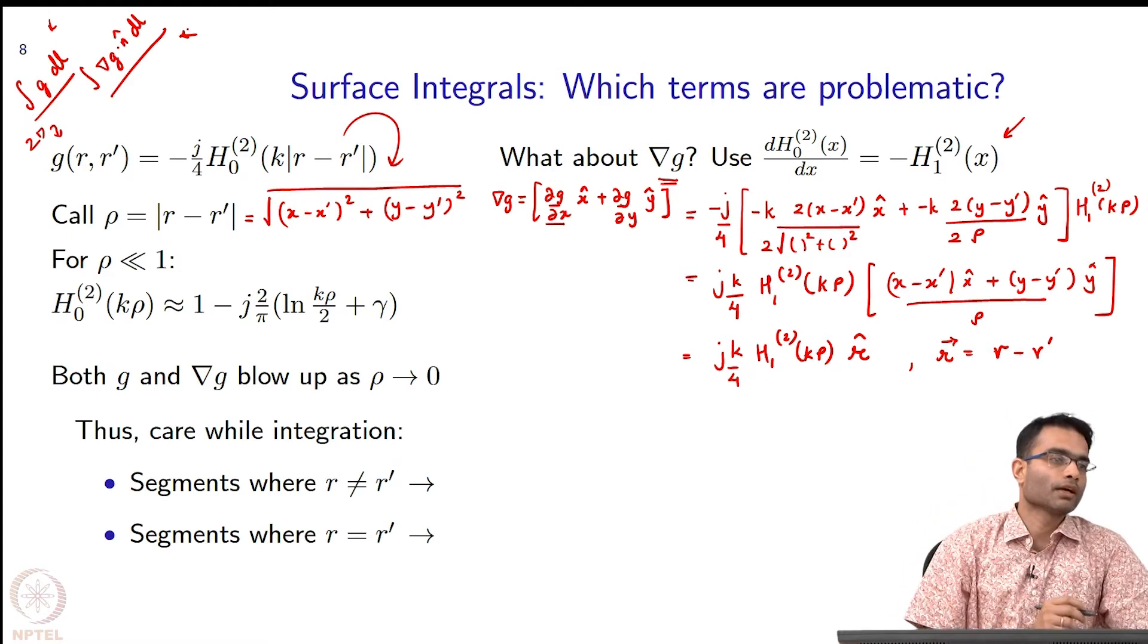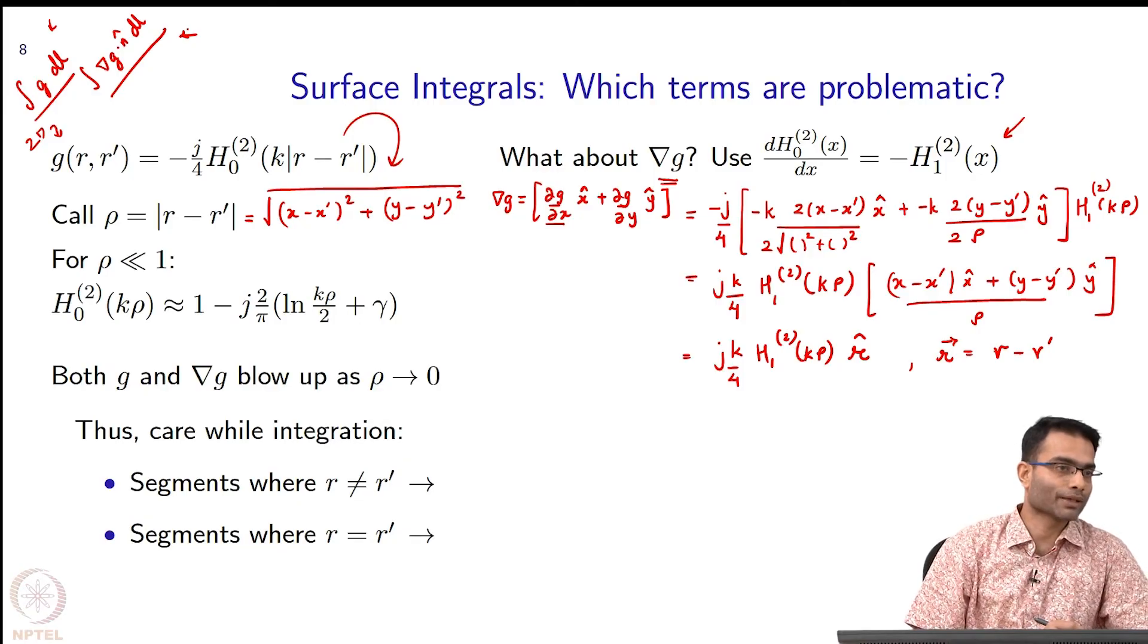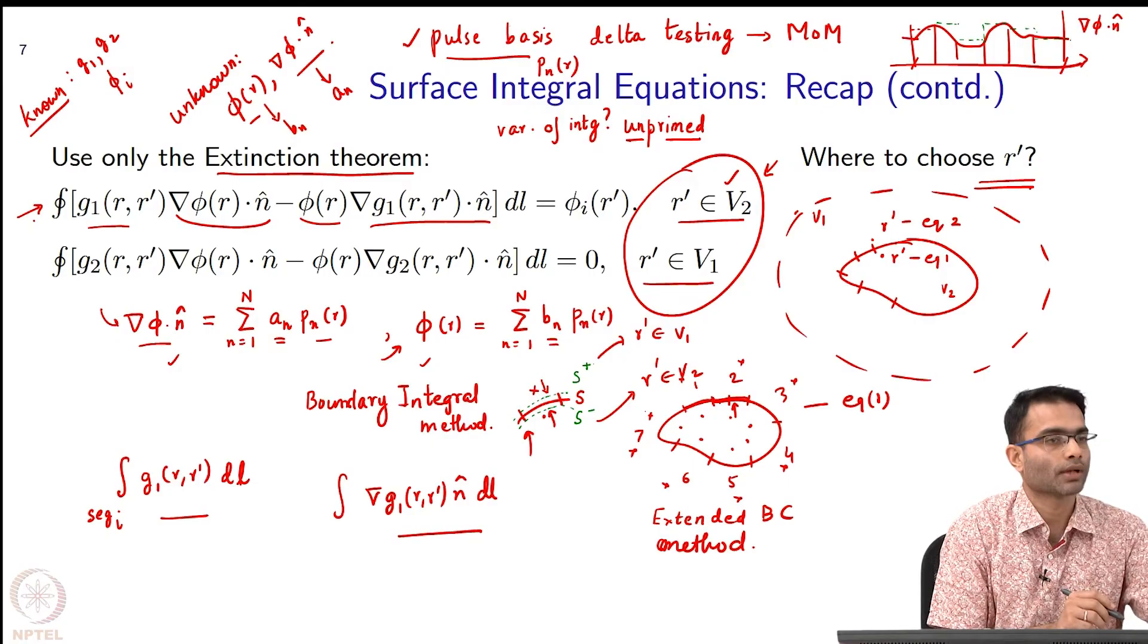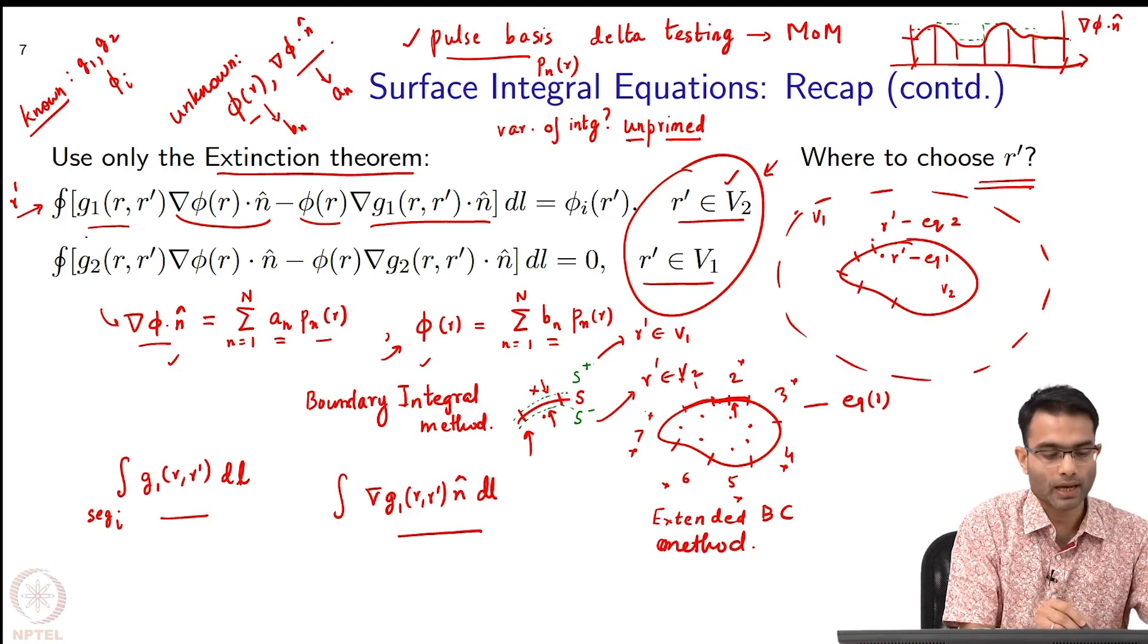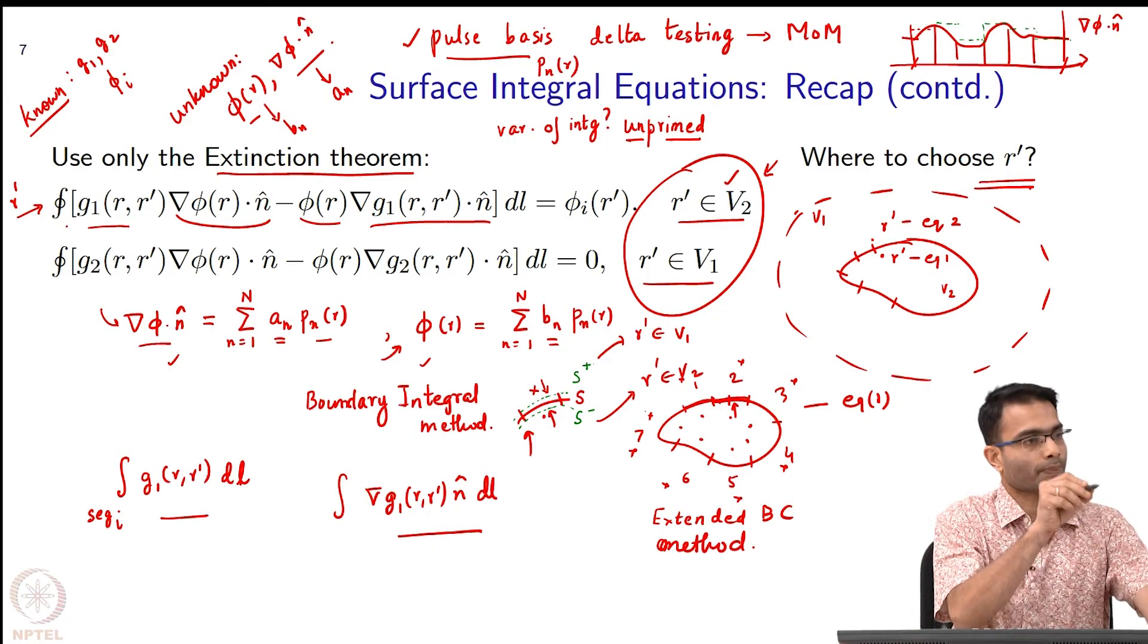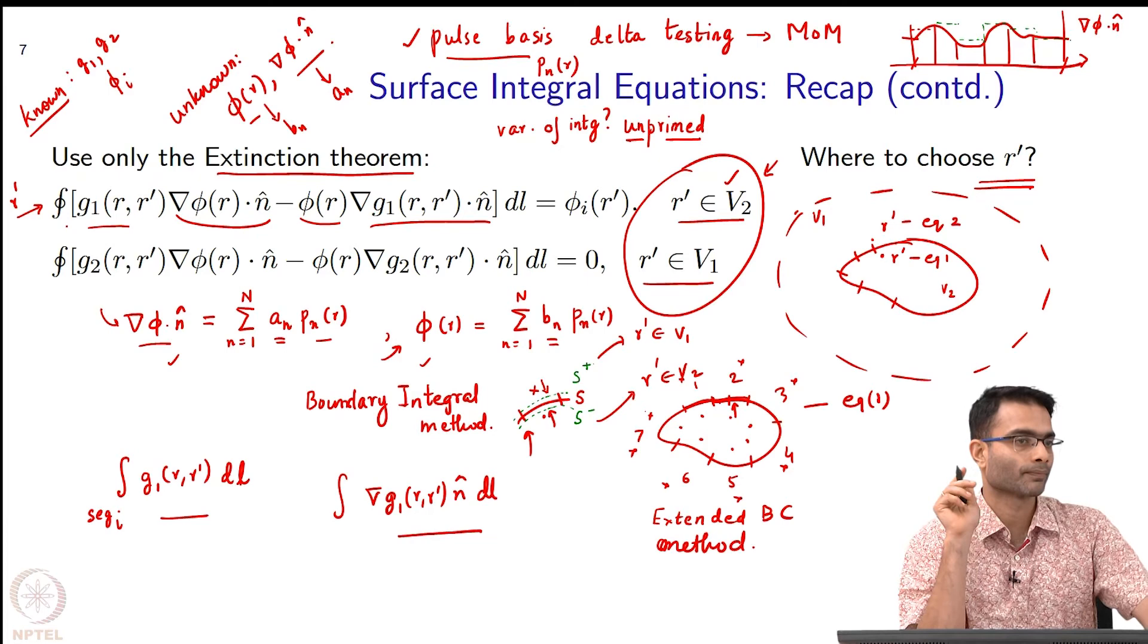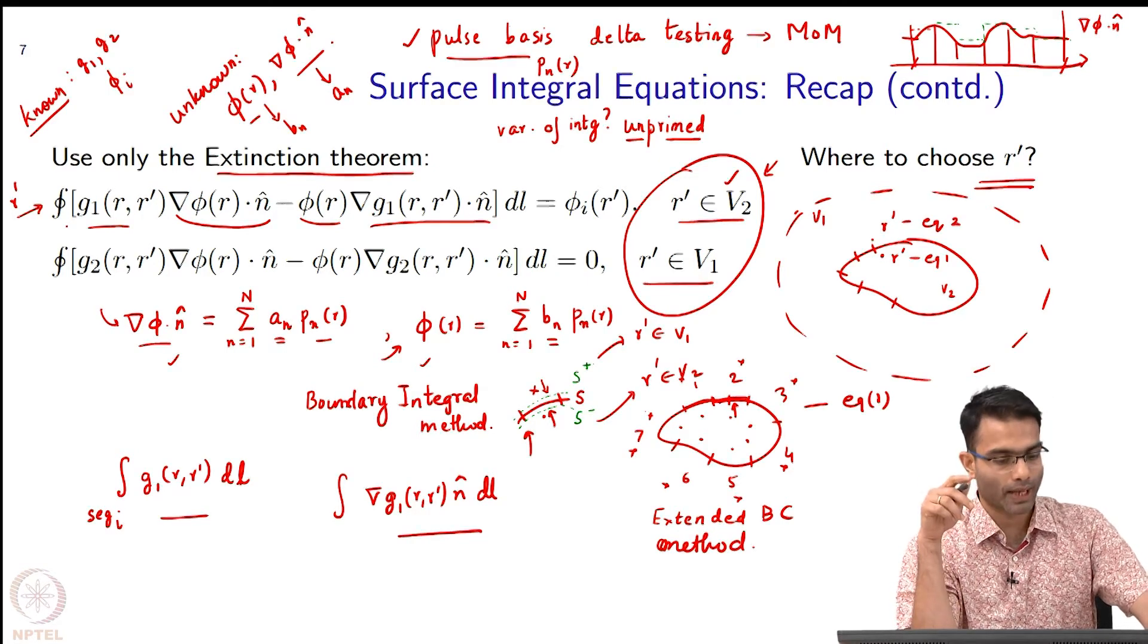Origin in this case means when r is equal to r prime, that is the singularity. When I am doing this integration, I am keeping fixed r prime is fixed, and where is r going? Over the looping over the entire boundary. R prime is also on the boundary, looping over the boundary. There will be at least one segment where r is going to be equal to r prime. At those points, what will happen?